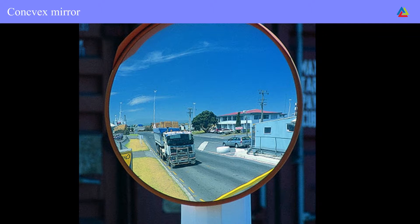Uses of convex mirrors: one, they are commonly used as rear-view mirrors in vehicles. Two, convex mirrors give erect, diminished images and have a wider field of view as they are curved outwards, enabling drivers to view a much larger area than would be possible with a plane mirror.